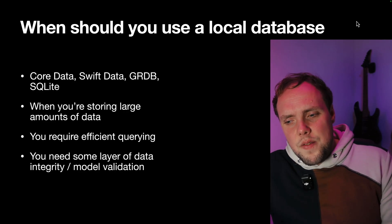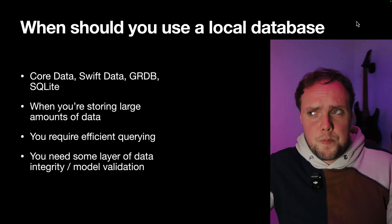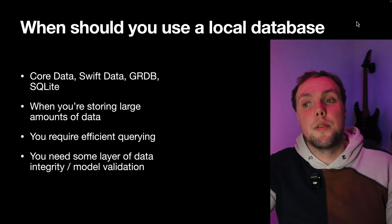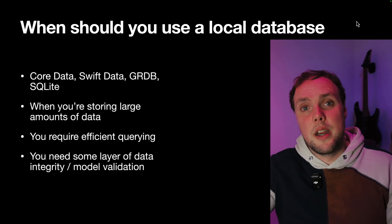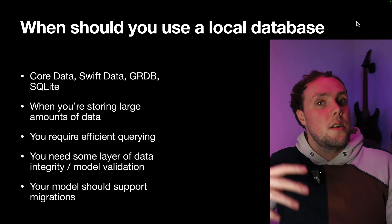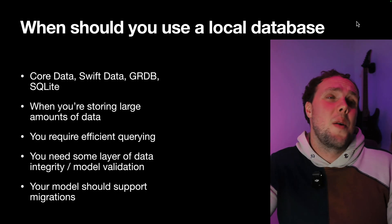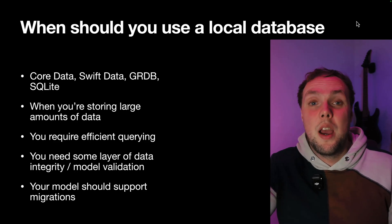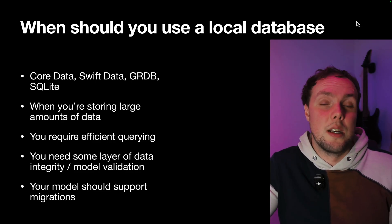Another benefit of using something like Core Data is model validation. Core Data, SwiftData, GRDB, or even SQLite will make sure you don't insert incomplete objects. If you say there must be a relationship from A to B and you try to persist your object without that relationship, the save is not going to happen — a nice layer of validation. And it's also really useful when you want to change your model over time, because most relational databases allow some strategy for migrating data from the old format to the new one. With Core Data or SwiftData, you even get that for free because those frameworks try to migrate your data model automatically, making sure your users don't lose any data in the process.